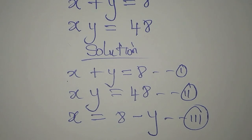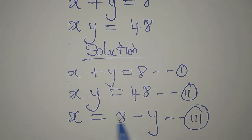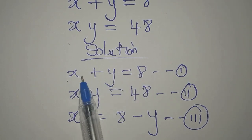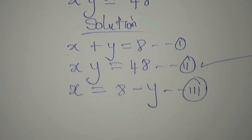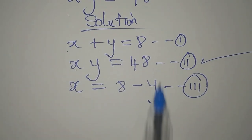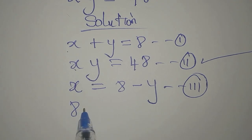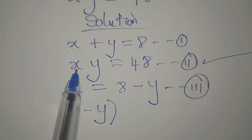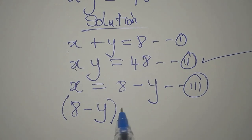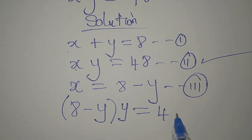Mind you: if you got equation 3 from equation 1, don't put that value of x from equation 3 back into equation 1 again. You'll put it into equation 2. So in place of this x, I'll write 8 minus y. We write (8 minus y), and this is multiplied by y outside the bracket, and this is equal to 48.